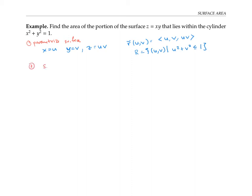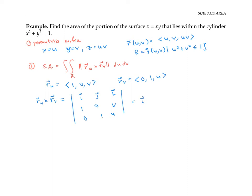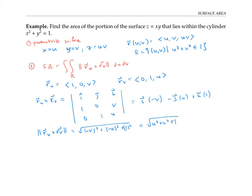Plugging into the formula for surface area — the integral of |r sub u cross r sub v| du dv over the region — I compute: r sub u equals (1, 0, v) and r sub v equals (0, 1, u). The cross product is i times (−v) minus j times (u) plus k times (1), giving (−v, −u, 1). The magnitude of the cross product is the square root of v squared plus u squared plus 1, which is the square root of u squared plus v squared plus 1.